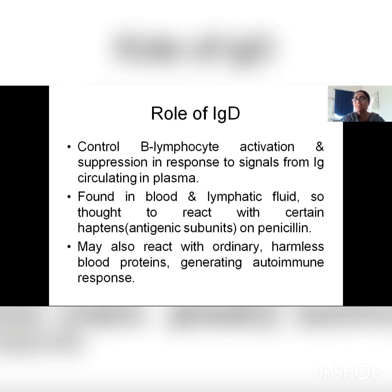IgD is found in blood and lymphatic fluid. It is thought to react with certain haptens — if it reacts with a hapten, penicillin allergy can be seen. It can also sometimes react with harmless proteins and give rise to an autoimmune response.